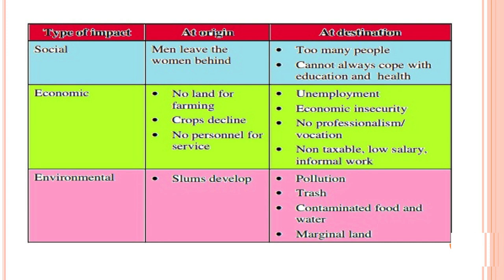The types of impact are social, economic and environmental. Social impact at origin: men leave women behind. At destination: too many people cannot always cope with education and health demands. Economic impact at origin: no land for farming, crop decline, no personnel for services. At destination: unemployment, economic insecurity, no professionalism or recreation, low salary, non-taxable informal work. Environmental impact at origin: slum development. At destination: pollution, trash, contaminated food and water, and marginal land use.